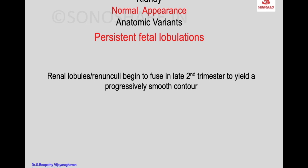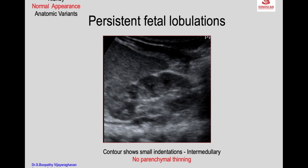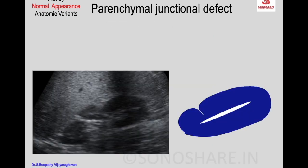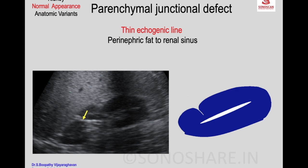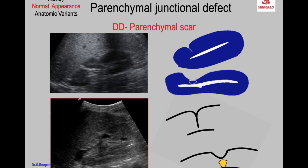Persistent fetal lobulation seen in neonates can persist: renal lobules begin fusing in the late second trimester to yield a progressively smooth contour, but sometimes this fusion is incomplete and the contour shows small indentations between the medullary pyramids with no parenchymal thinning. The parenchymal junctional defect is seen as a thin echogenic line extending from perinephric fat to the renal sinus between the upper and mid-third junction, more common on the right side. The differential diagnosis is a parenchymal scar; in a junctional defect the contour defect angle is acute, whereas in a scar it is obtuse, and the underlying calyx is normal in a junctional defect but blunted in a scar.